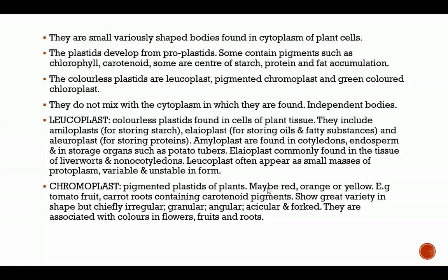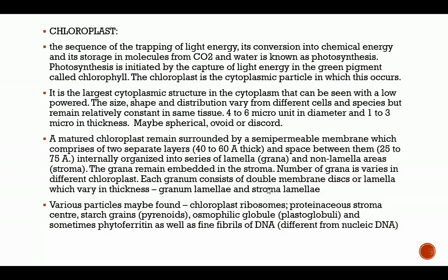Chromoplasts show great variety in shape — chiefly irregular, granular, angular, acicular, or forked — and are associated with colors in flowers, fruits, and roots. Chloroplasts are the most interesting part in crop science. What makes the plant green is the chloroplast. The capture of light energy, its conversion into chemical energy, and its storage in molecules from carbon dioxide and water is known as photosynthesis, which is initiated in the chloroplasts by the green pigment chlorophyll.